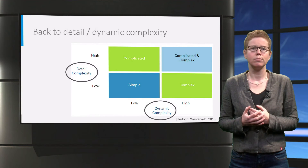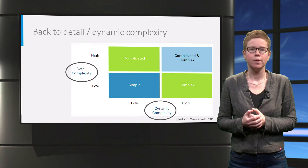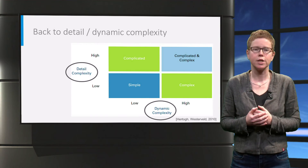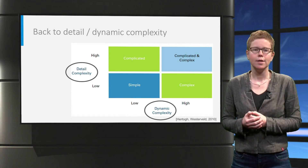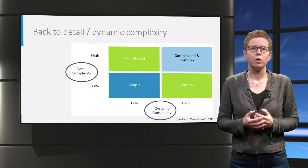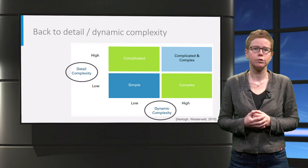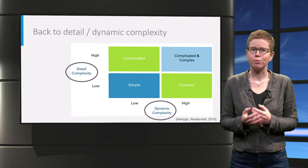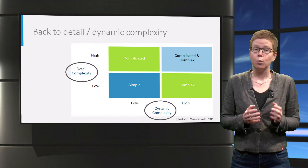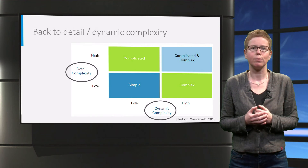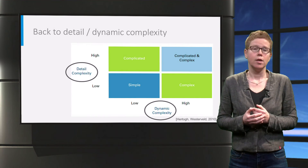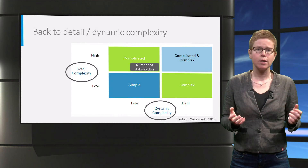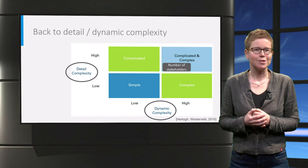Let's now go back to the 2x2 model of Hertog and Westerveld. They distinguish detail and dynamic complexity: detail complexity is characterized by a high number of components with a high degree of interrelatedness, and dynamic complexity by the potential to evolve over time and limited understanding and predictability. They say that only when uncertainties are involved can one speak of real complexity, because this cannot be simply decomposed. Mapping the TOE framework elements to the detail-dynamic dimensions helps determine which approach would be effective to manage specific complexity. Where TOE elements fit is very much context-dependent — in one project, the number of stakeholders might be placed in detail complexity, whereas in another it could be in dynamic complexity, or a combination of both. This is no exact science — it just depends.